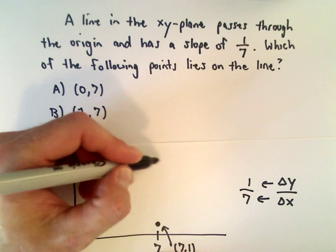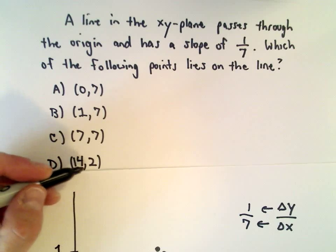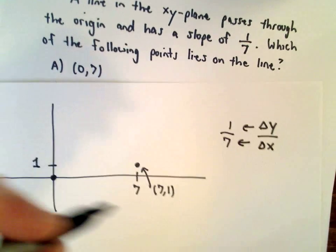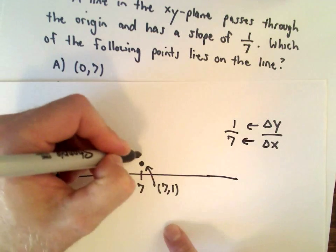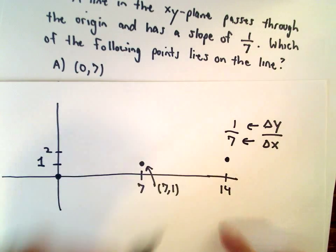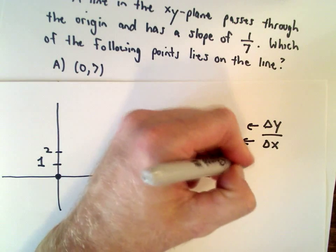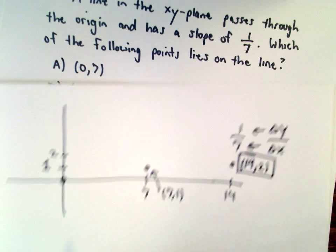So by deduction, (14,2) seems to be correct, and that makes sense because from this point if we go up another one unit we'll be at 2, and then over another 7 units we'll be at 14. So it looks like (14,2) is going to be the correct answer, answer choice D.